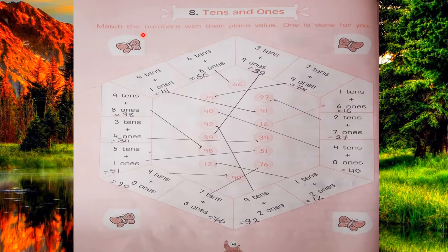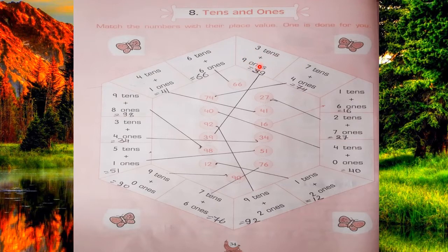So here in the first exercise, match the numbers with their place value — one is done for you. You have to match these numbers with their place value. Just like the first: 3 tens and 9 ones. 3 tens means 30 and 9 ones means 9, so it is equal to 39. You will match with 39.